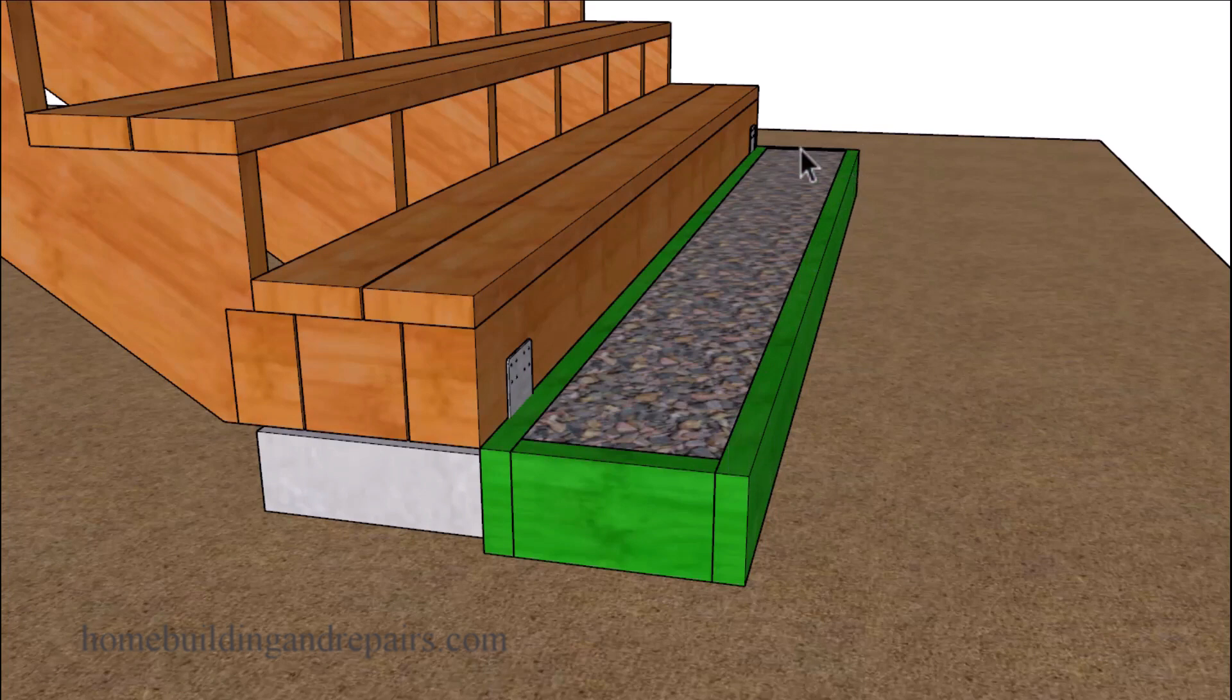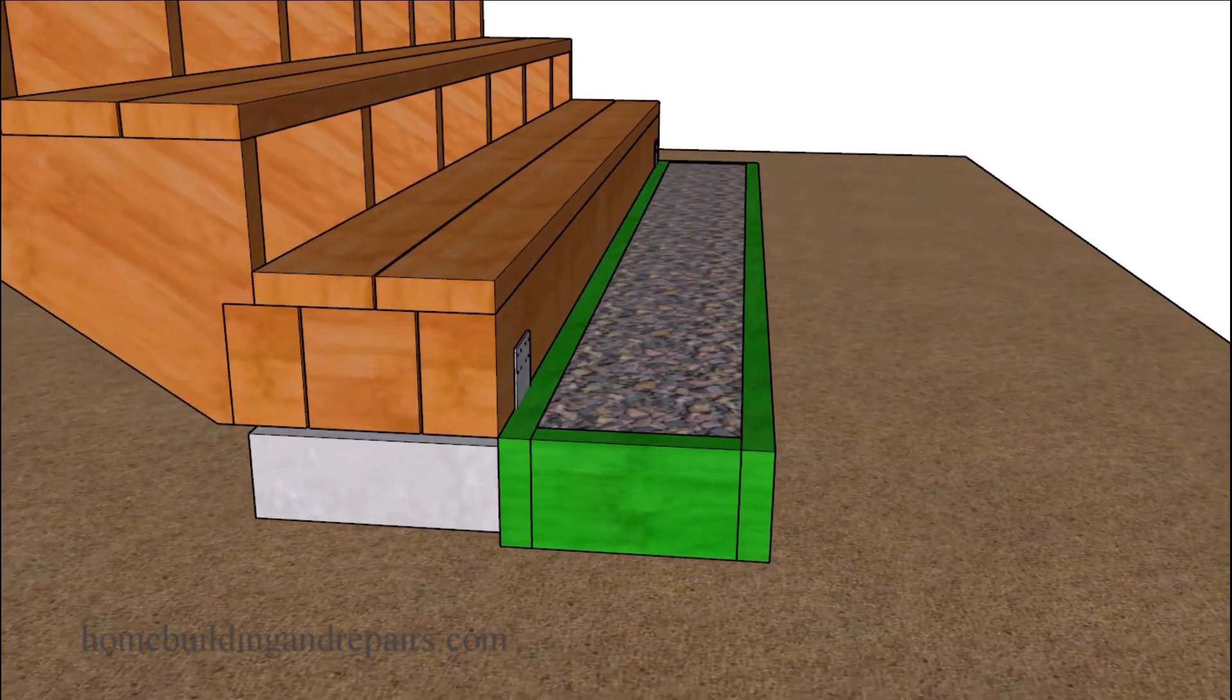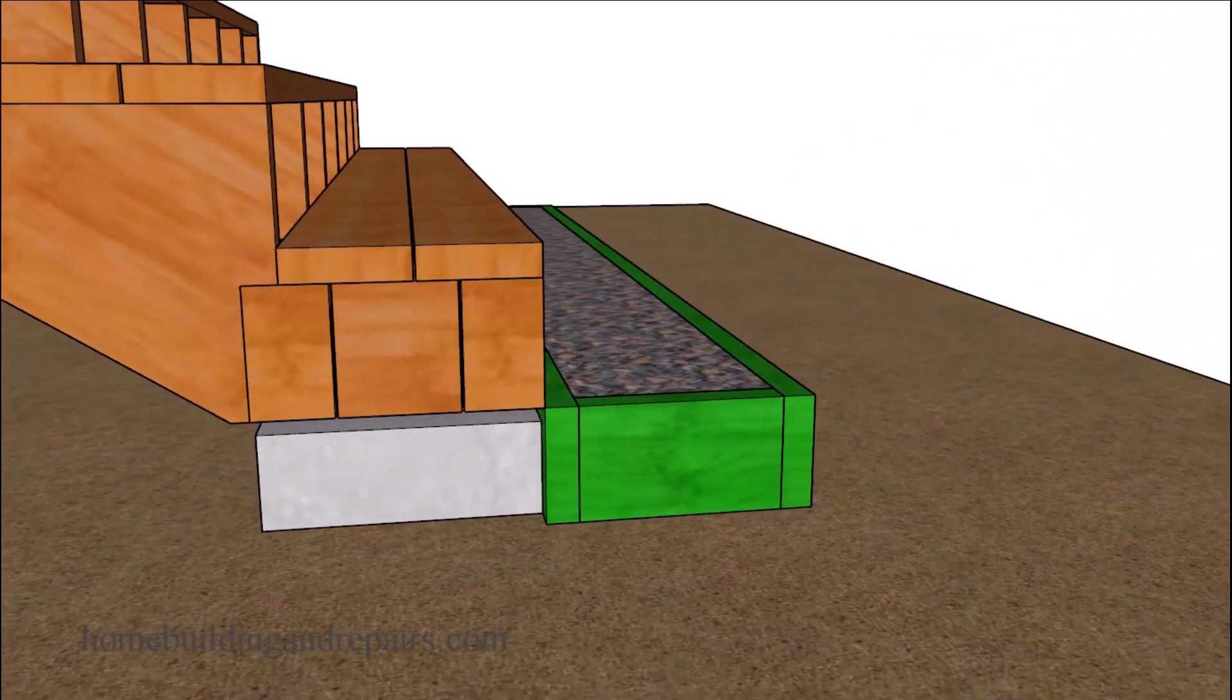Obviously the inside is going to be better for this side here. And then attach the perimeter boards to the stakes, metal or wood, and then fill the box with gravel to create another step.